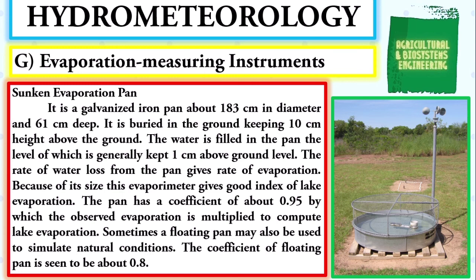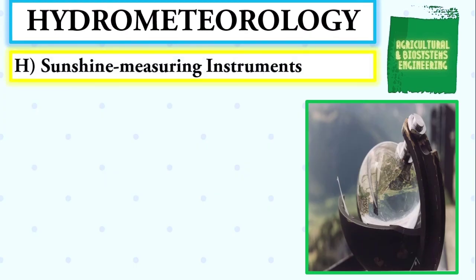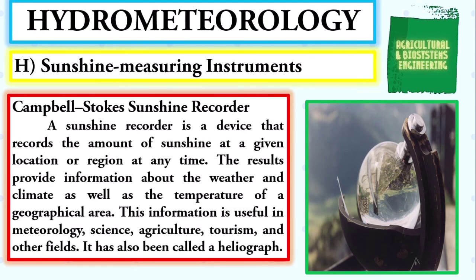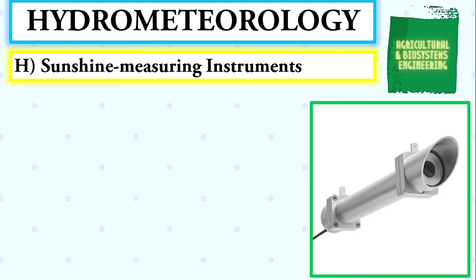Next, the sunshine measuring instruments. We begin with the Campbell-Stokes sunshine recorder — a device that records the amount of sunshine at a given location at any time. The results provide information about weather and climate as well as the temperature of a geographical area, useful in meteorology, agriculture, tourism, and other fields. It has also been called a heliograph.